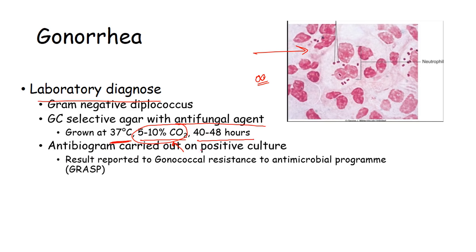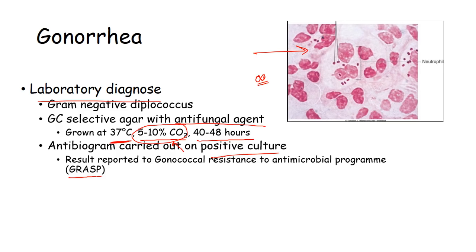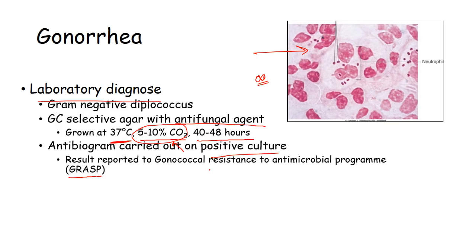An antibiogram is carried out on a positive culture. The result is reported to the Gonococcal Resistance to Antimicrobial Surveillance Programme, also known as GRASP. Antibiotic susceptibility testing may also be done to check what kind of antibiotic should be given to properly treat gonorrhea.